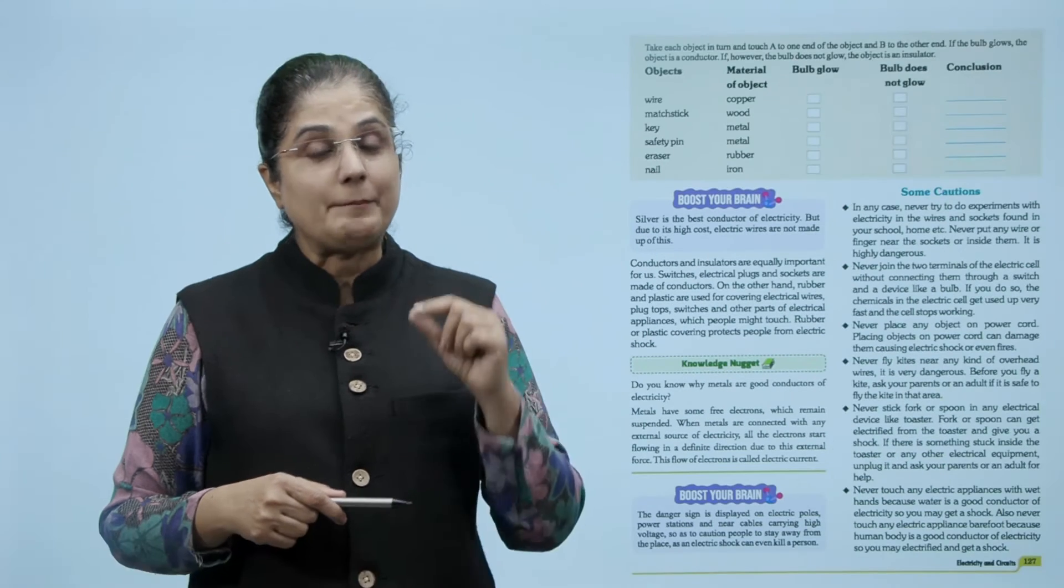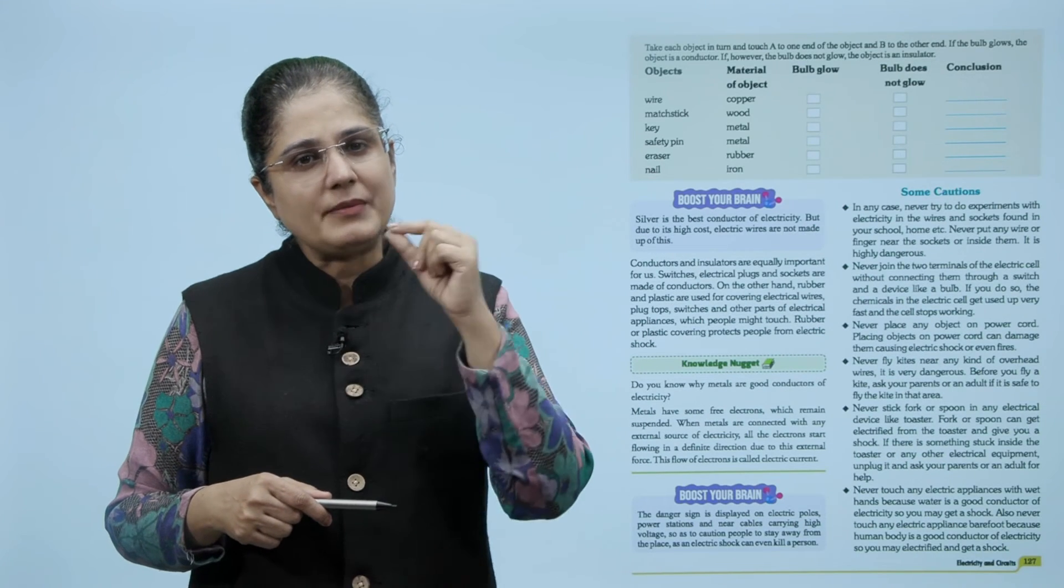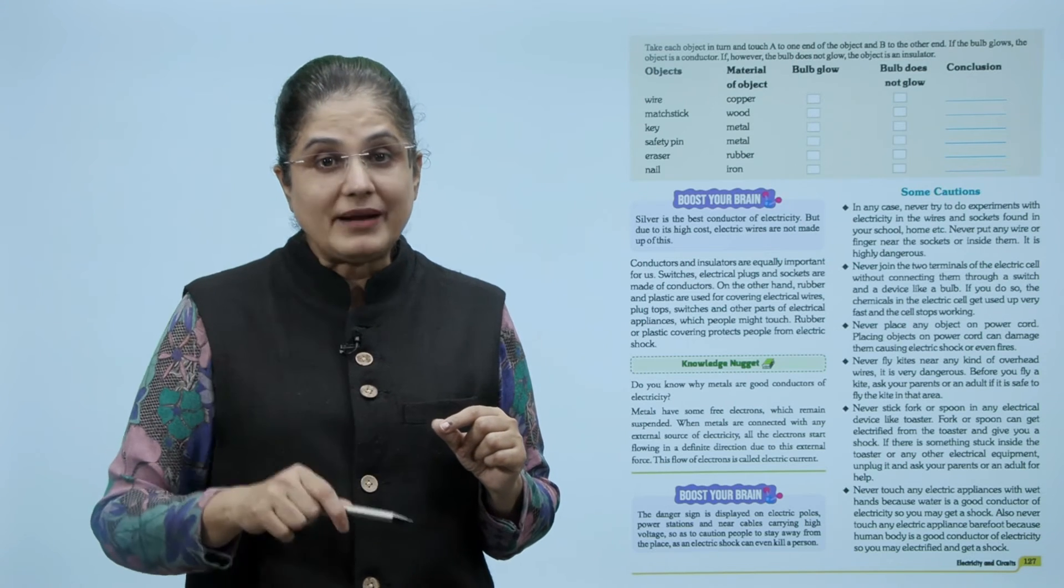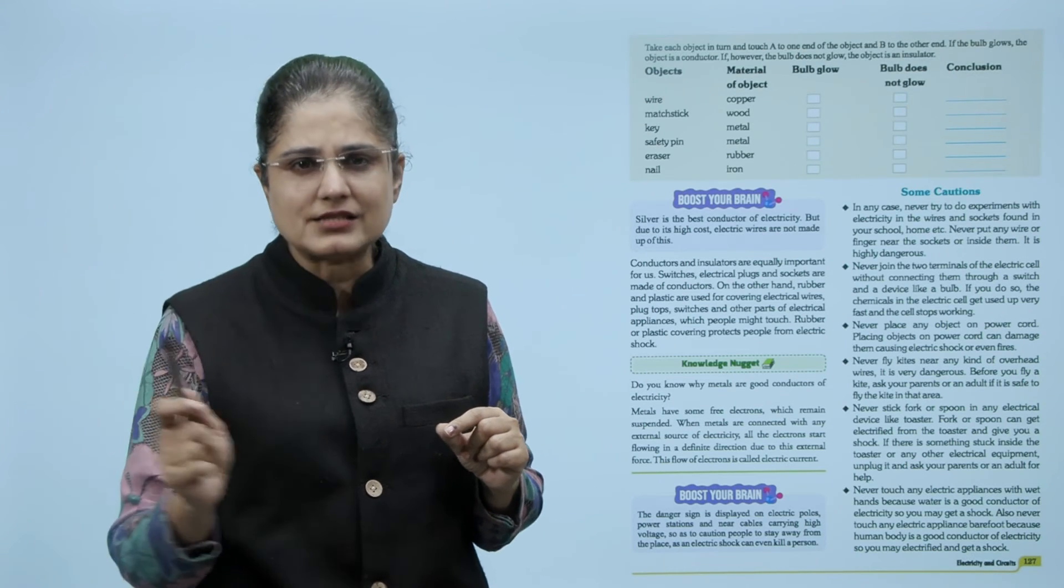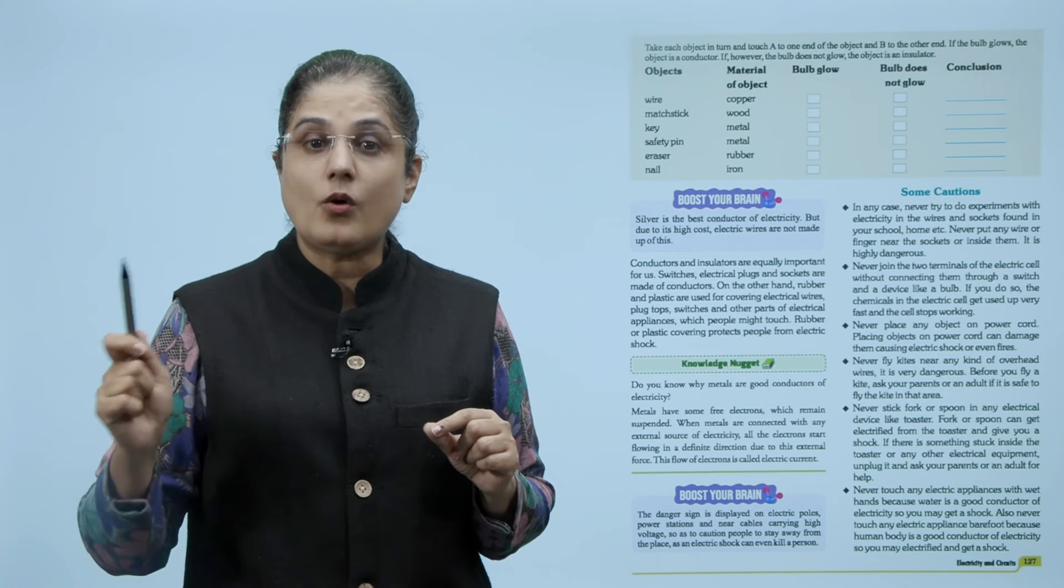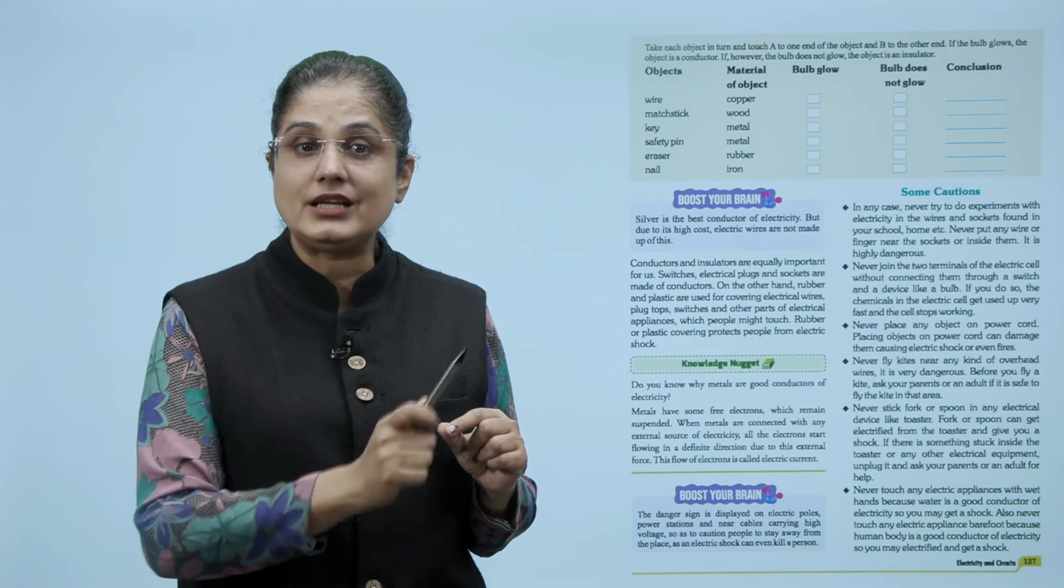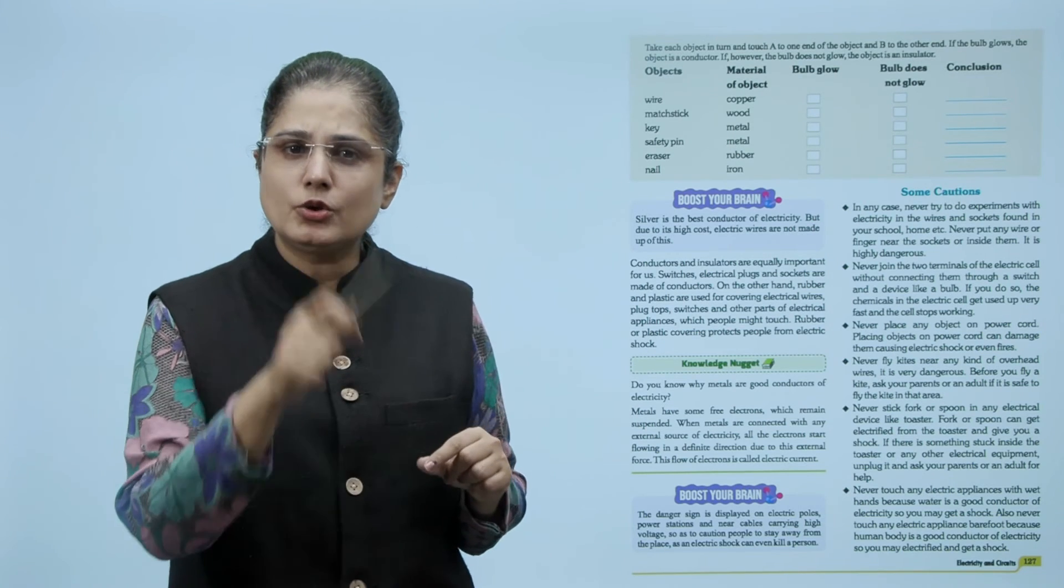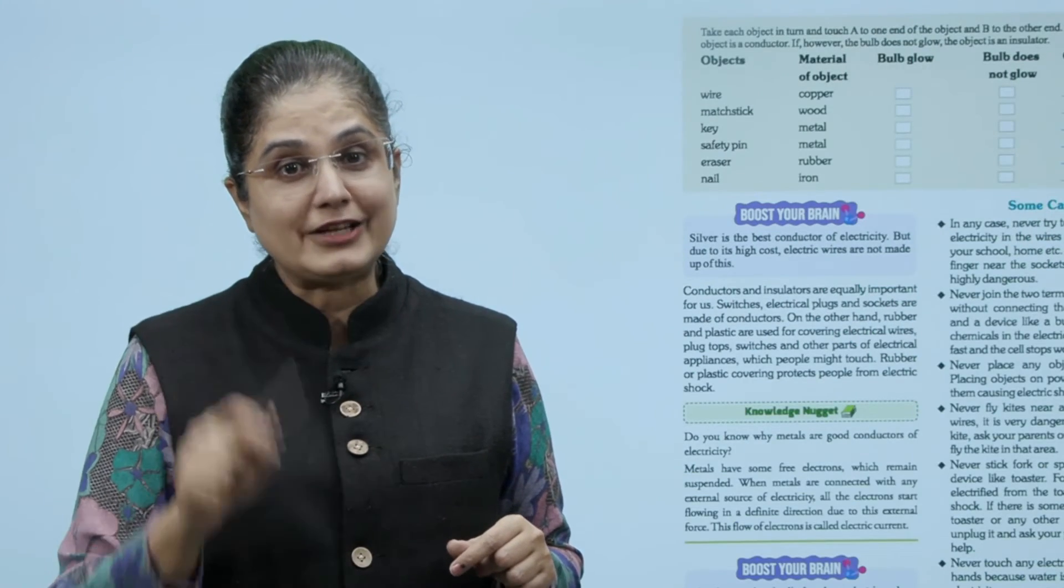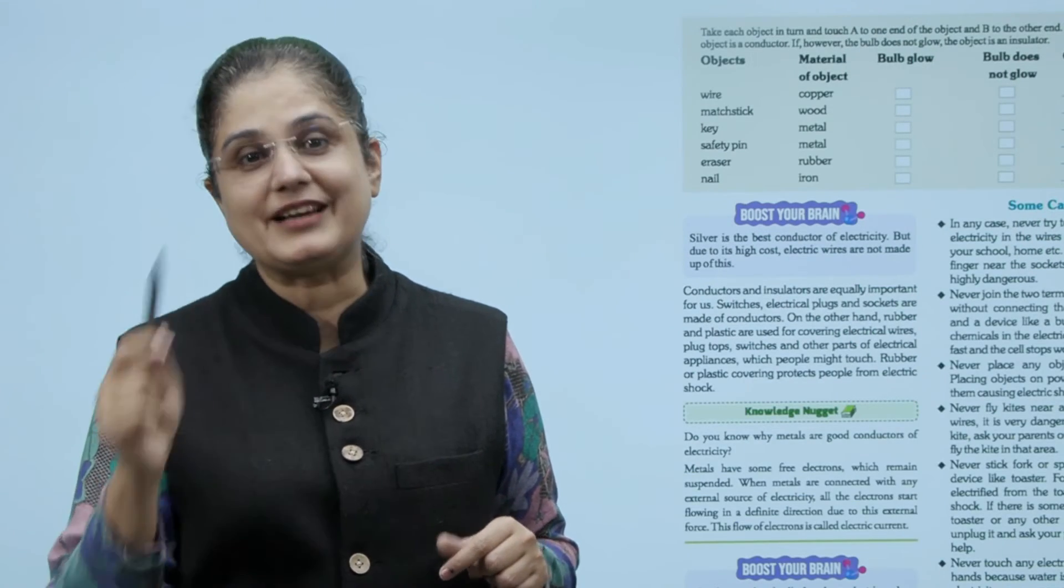Do you know why metals are good conductors of electricity? Metals have some free electrons which remain suspended. When metals are connected with any external source of electricity, all the electrons start flowing in a definite direction due to this external force. This flow of electrons is called electric current.